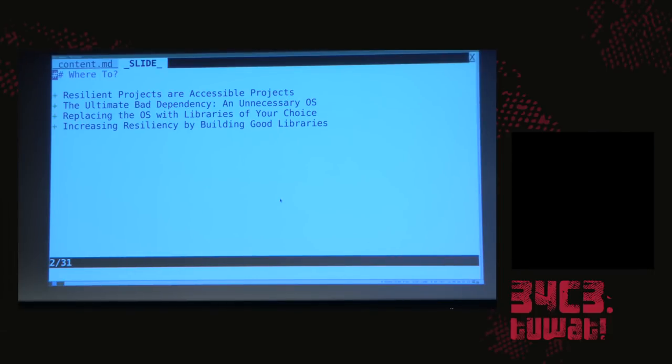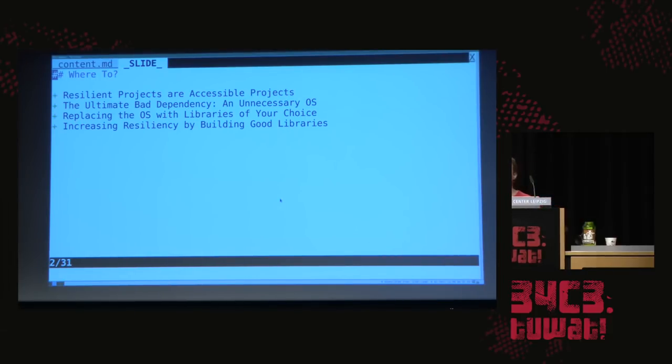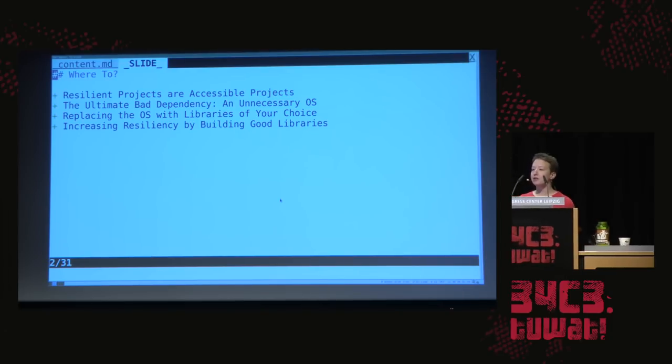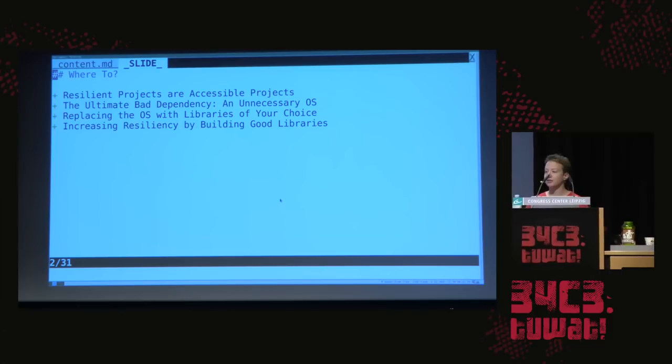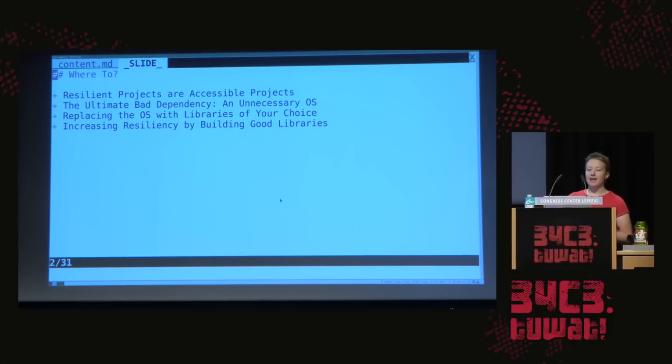Today I'm going to talk about ways that we can use library operating systems and unikernels to reject the default reality of abstractions and substitute our own. A quick roadmap: this talk is in the resiliency track, which is new at CCC this year, and I wanted to talk about why I think resiliency is very relevant to the work we're doing in library operating systems and unikernels.